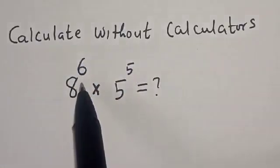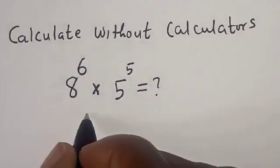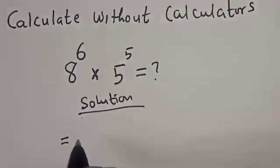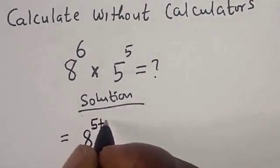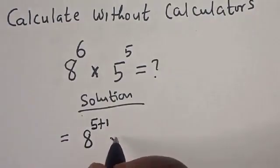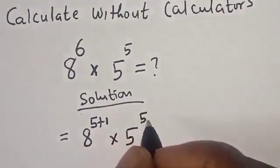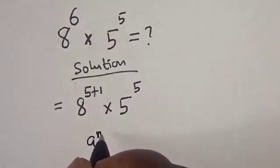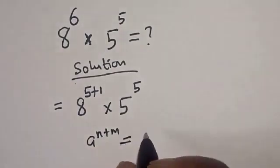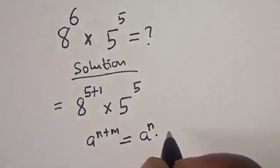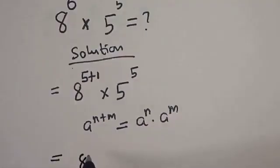Calculate without calculators: 8 raised to power 6 multiplied by 5 raised to power 5. Solution: 8 raised to power 6 can be written as 8 to the power of 5 plus 1, multiplied by 5 to the power of 5. Using the rule a raised to power n plus m equals a to the power of n multiplied by a to the power of m.